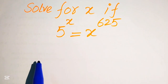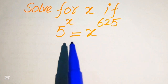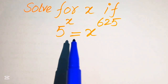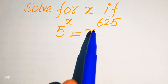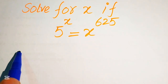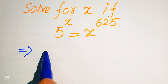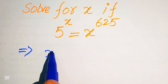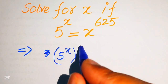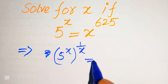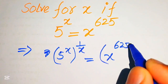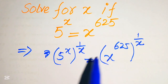In order to find the value of x, we need to move the variable terms to the right-hand side and the constant terms to the left-hand side. To move x to the right-hand side, we take the x root — that is, the 1/x power — on both sides. So it will be written as 5 to the power of x, whole power 1/x, equals x to the power of 625, whole power 1/x.